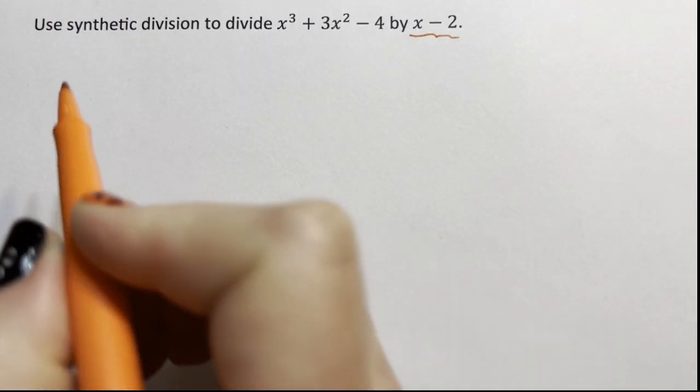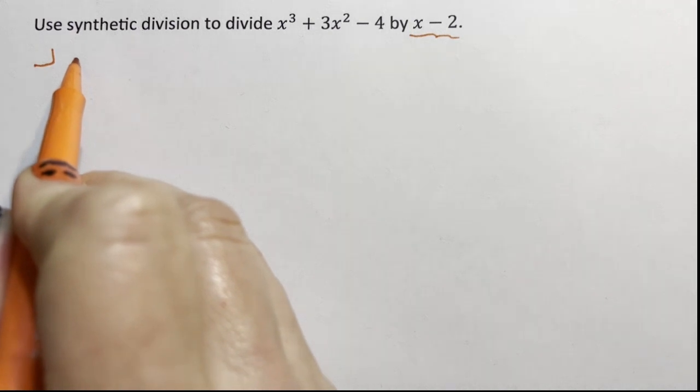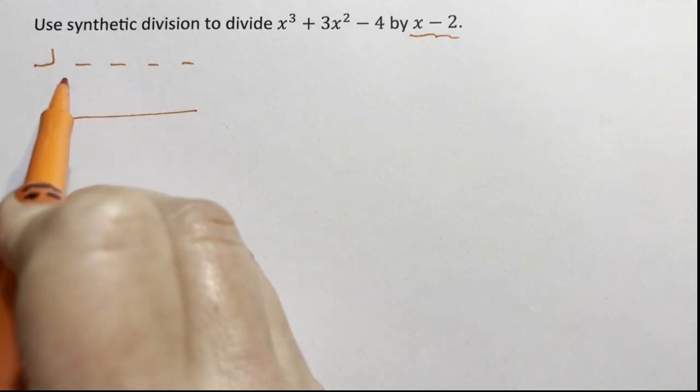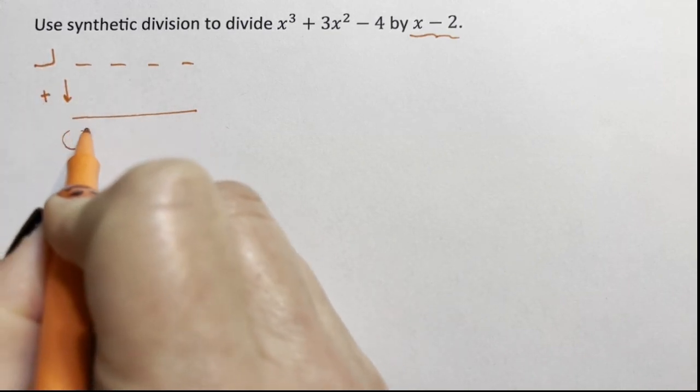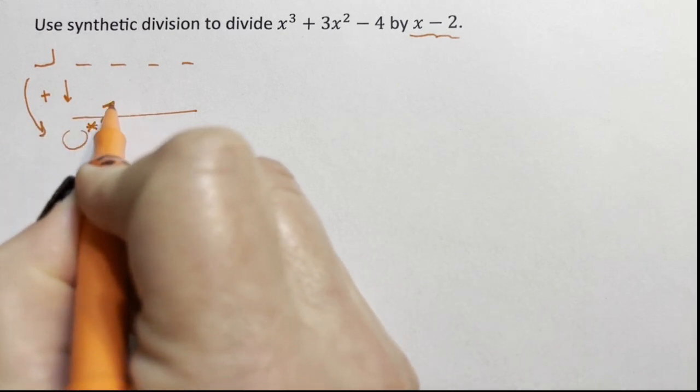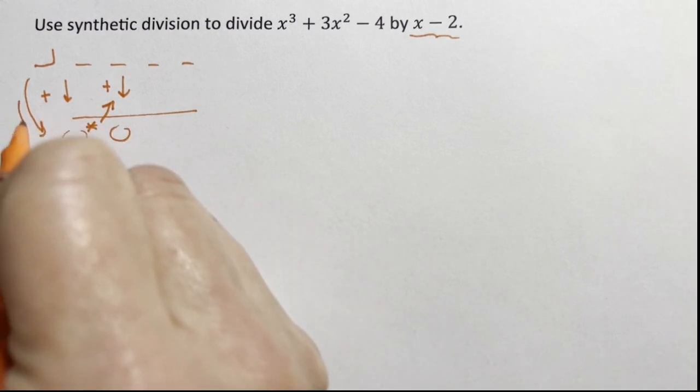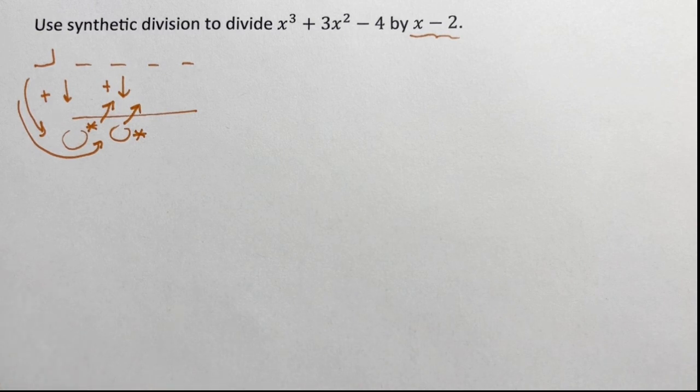So the process is, I always put what I'm dividing by in a box. You have numbers, you multiply, you add down and then whatever you get here, you multiply up. Then you add down and whatever you get here, you multiply up. And that's the process. Add and multiply, add and multiply, add and multiply.